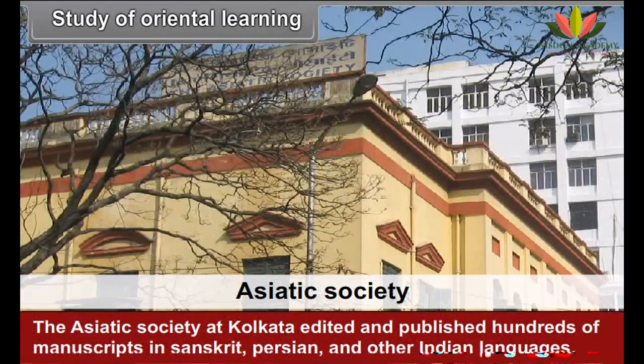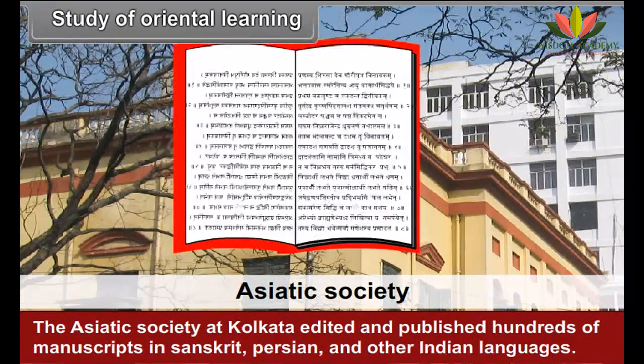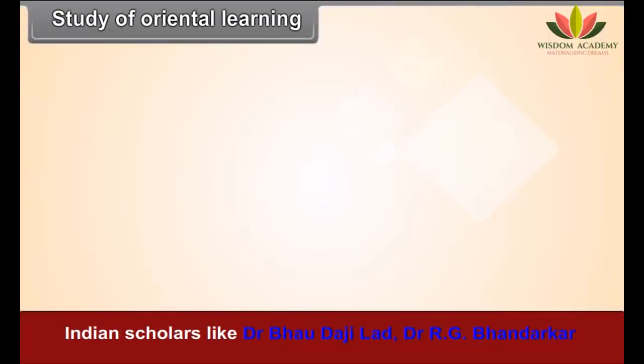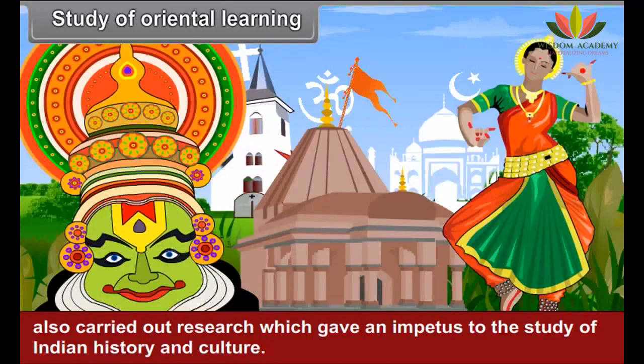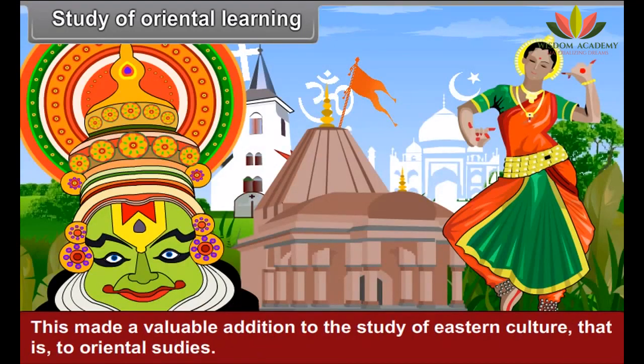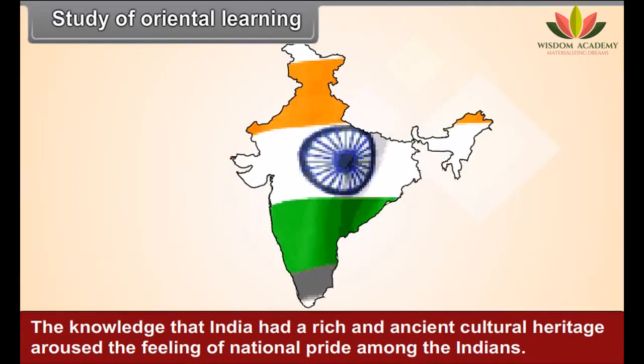Study of Oriental Learning: In the latter half of the 18th century, some Western scholars had started doing research in the field of ancient Indian history and culture. The Asiatic Society at Kolkata edited and published hundreds of manuscripts in Sanskrit, Persian and other Indian languages. Indian scholars like Dr. Bhau Daji Lad and Dr. R. G. Bhandarkar also carried out research which gave an impetus to the study of Indian history and culture. This made a valuable addition to Oriental studies. The knowledge that India had a rich and ancient cultural heritage aroused the feeling of national pride among the Indians.